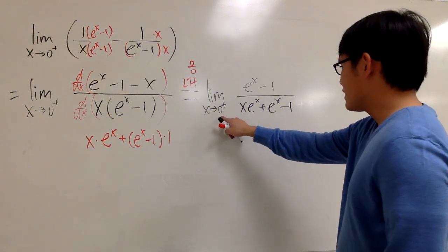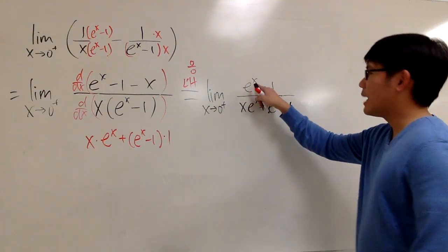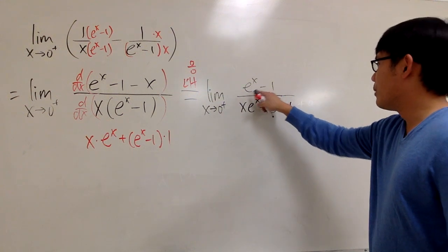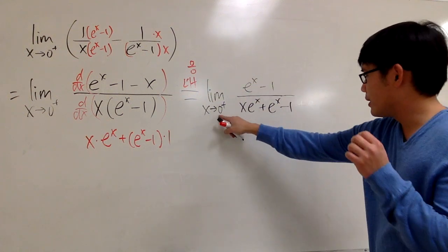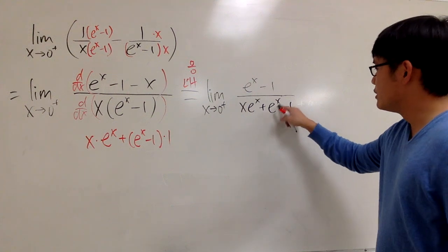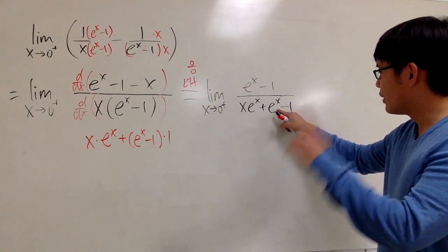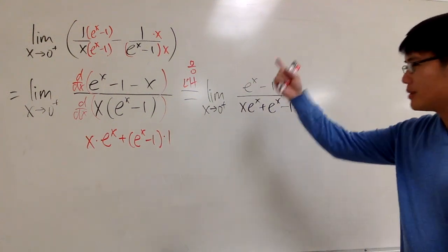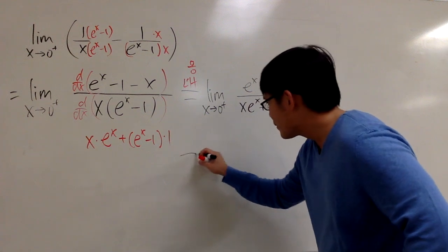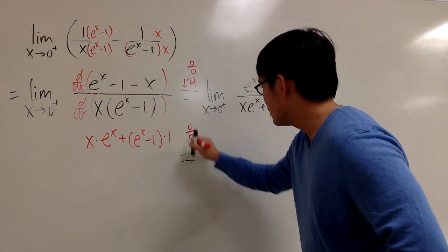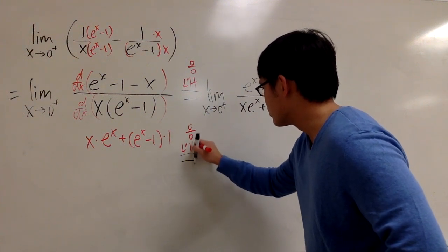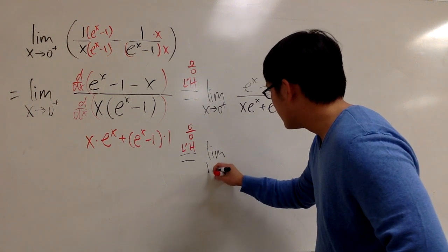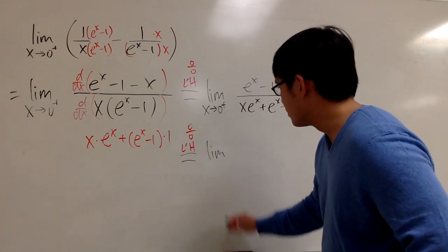Once again, plugging 0 into all the x: on the top, e to the 0 is 1, so 1 minus 1 is 0. Plugging 0 into the bottom also gives 0. So 0 over 0 — we apply L'Hôpital's rule again. This is still the limit as x approaches 0 plus.